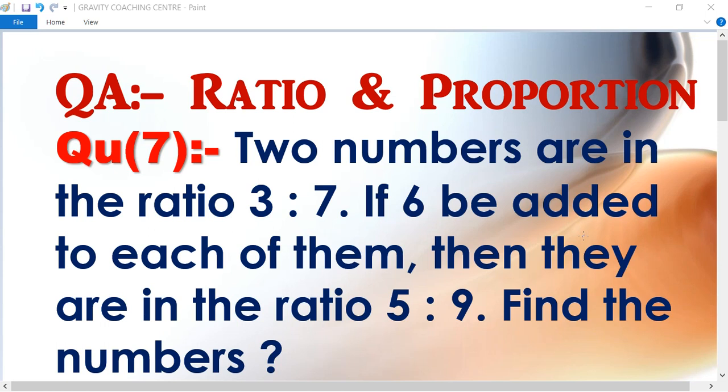Two numbers are in the ratio 3 is to 7. If 6 be added to each of them, then they are in the ratio 5 is to 9. Find the numbers.